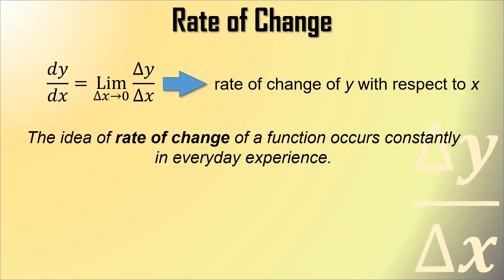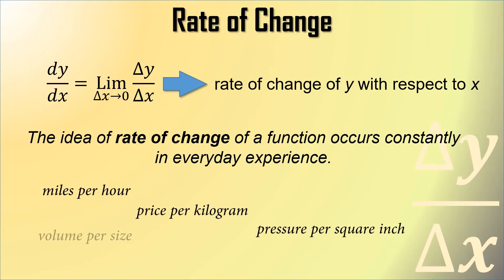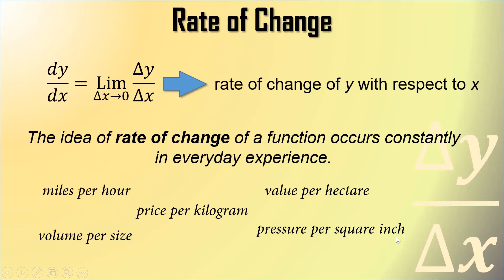This shows the rate of change of y with respect to x. The idea of rate of change of a function occurs constantly in everyday experience. We can see it everywhere. For example, we have units such as miles per hour, price per kilogram, value per hectare, volume per size, and pressure per square inch. These are all called the rate of change. Miles per hour means our change in distance with respect to time, or pressure per square inch means the change in pressure with respect to our area.